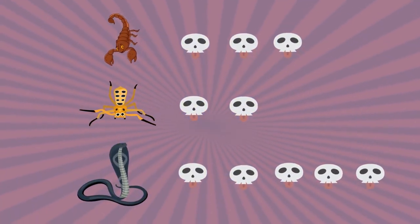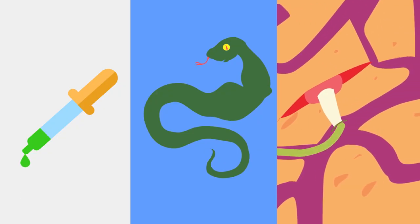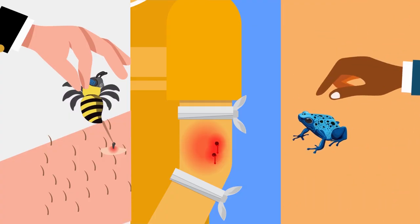Some are more lethal than others depending on three characteristics: dosage, potency, and the speed of distribution. Depending on these three factors will determine how deadly a bite, sting, or even mere contact will be.